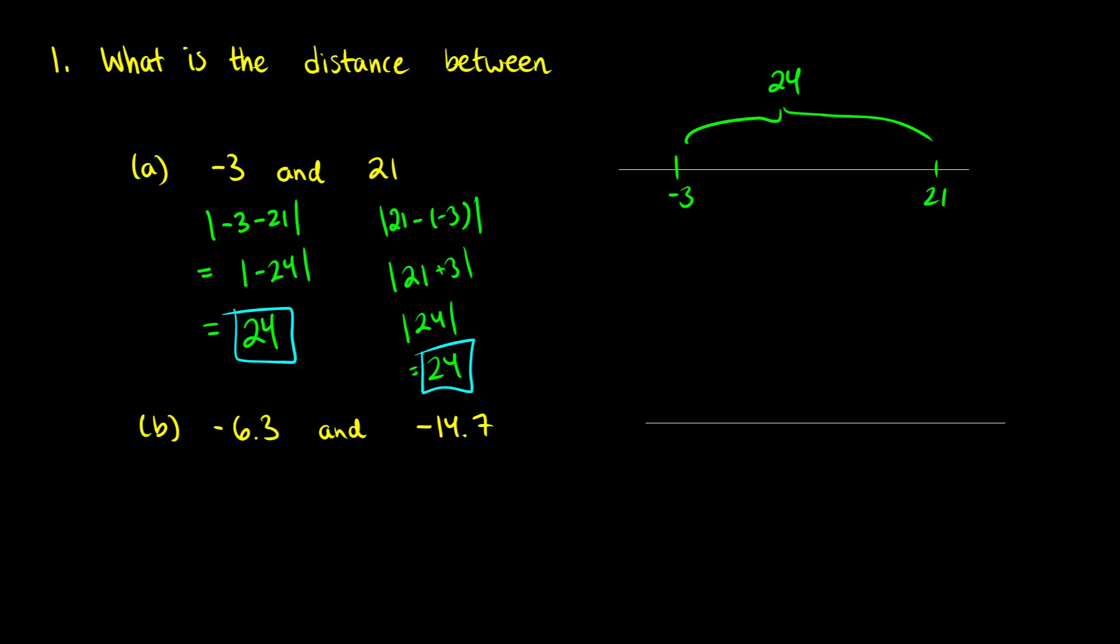This is where you might have some confusion because we have decimal points. So negative 14.7—it's going to be exactly the same process, but sometimes having the decimal point there makes the calculations harder for some people. Same process though, don't worry. We're still looking for the distance between these two. Might just not be as easy to do in your head. Same process.